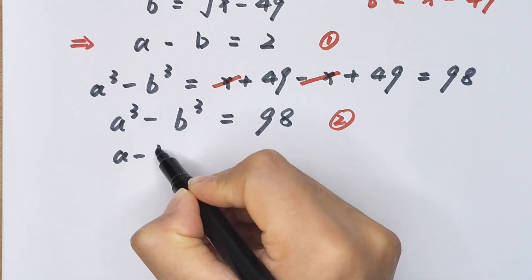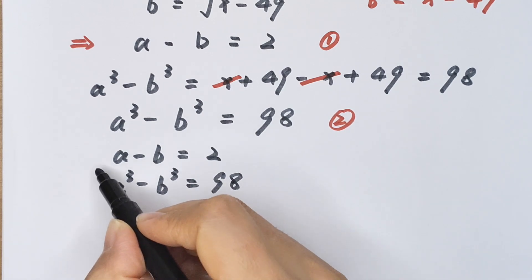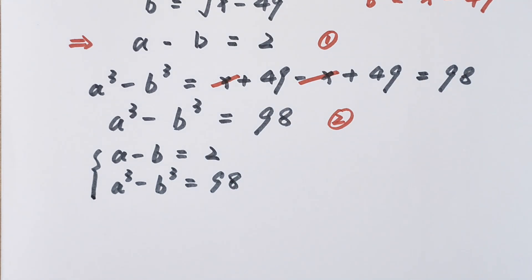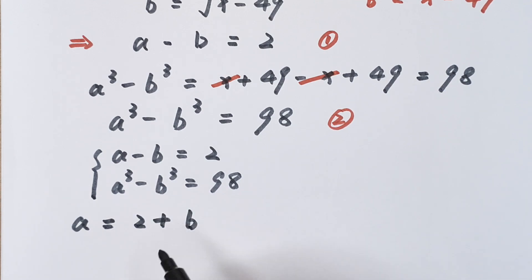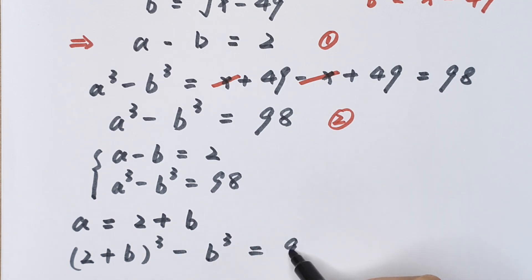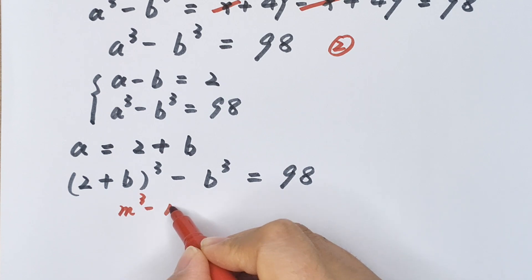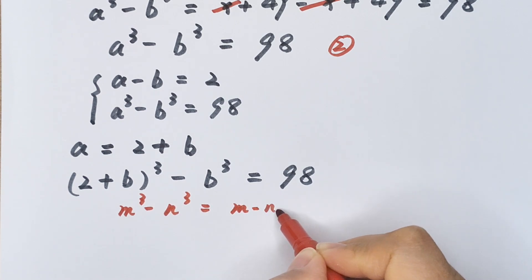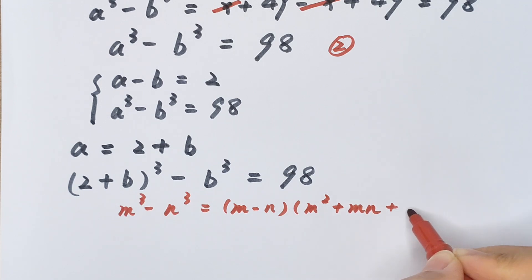So we have: a minus b equals 2 (equation 1) and a³ minus b³ equals 98 (equation 2). From equation 1 we get a equals 2 plus b. Substituting into equation 2: (2 + b)³ minus b³ equals 98.